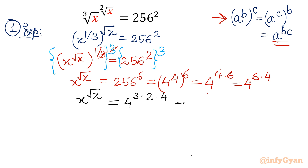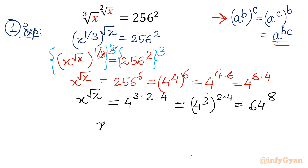Again by the same property of exponents, I can write 4 raised to 3, whole raised to 2 times 4. It is 2 times 4, not 2.4. So it will become 64 raised to the power 8. I will write x raised to square root x equal to 64 raised to 8, and 8 in the exponent I can write as square root 64.